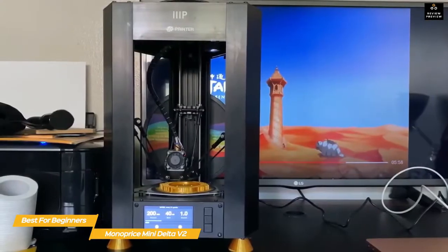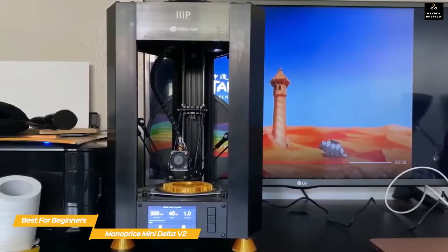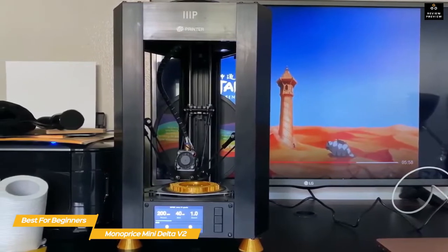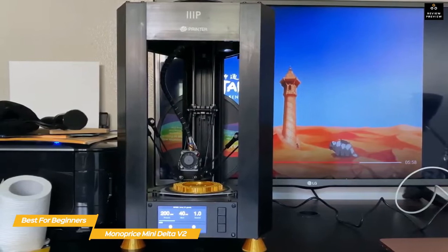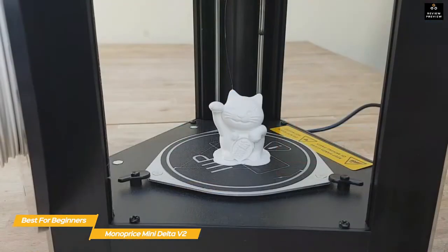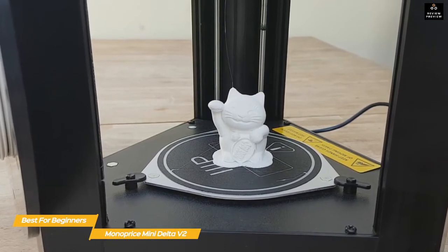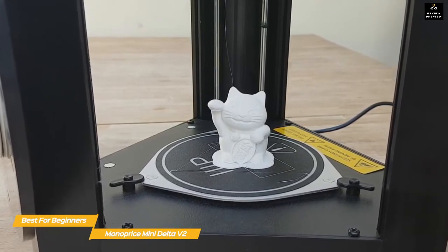Unlike most 3D printers, the Delta V2 is not based on the Cartesian coordinate system that uses X, Y, and Z axes, and instead uses a delta configuration within the equilateral triangular frame. Three carriages extend vertically 120 degrees apart and stand parallel to each other, which results in greater overall printing speed.